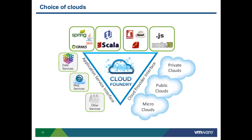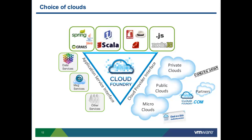Last but not least, the multi-cloud deployment options. When you choose your PaaS, you don't have to choose your cloud. MicroCloud lets you run it on your laptop for development. CloudFoundry.com is VMware's own operated instance running in the public cloud. There is also a choice of partners deploying Cloud Foundry today, and in the future a private version you can run on your own infrastructure.